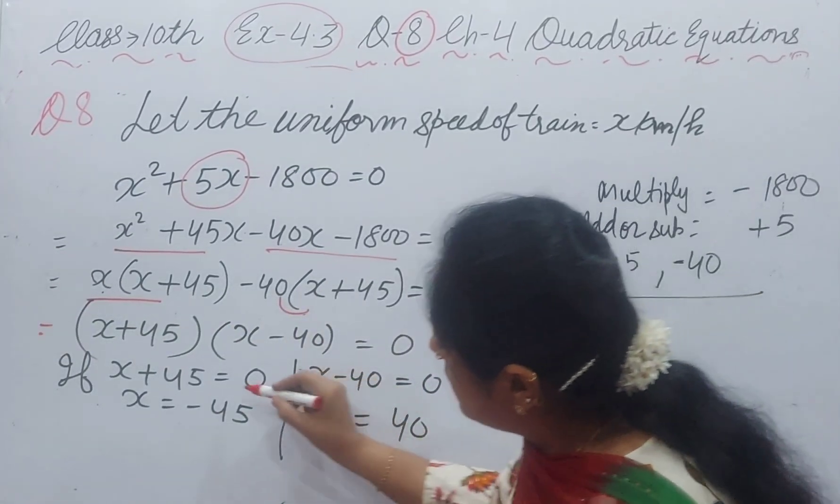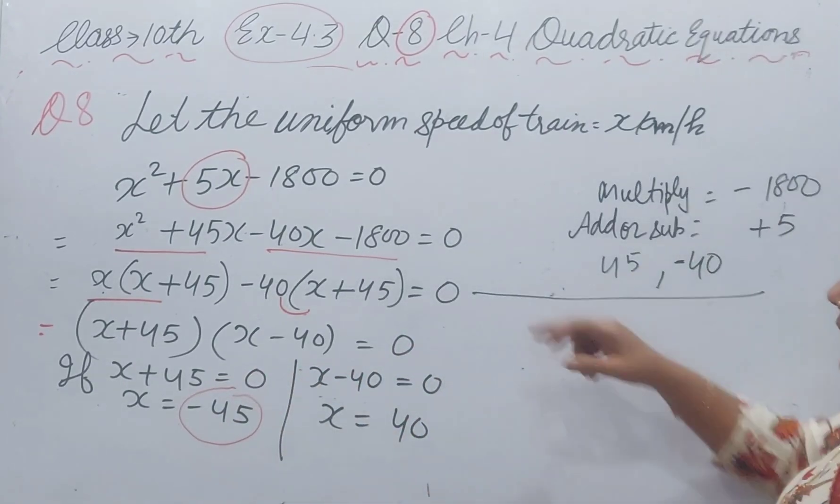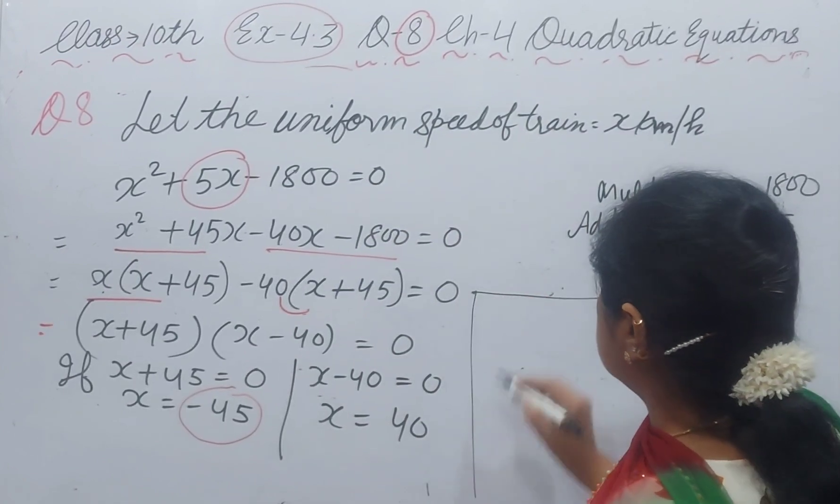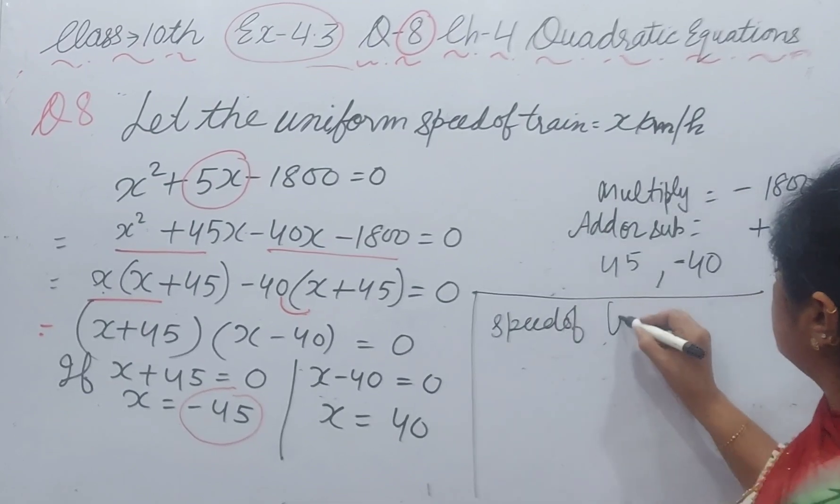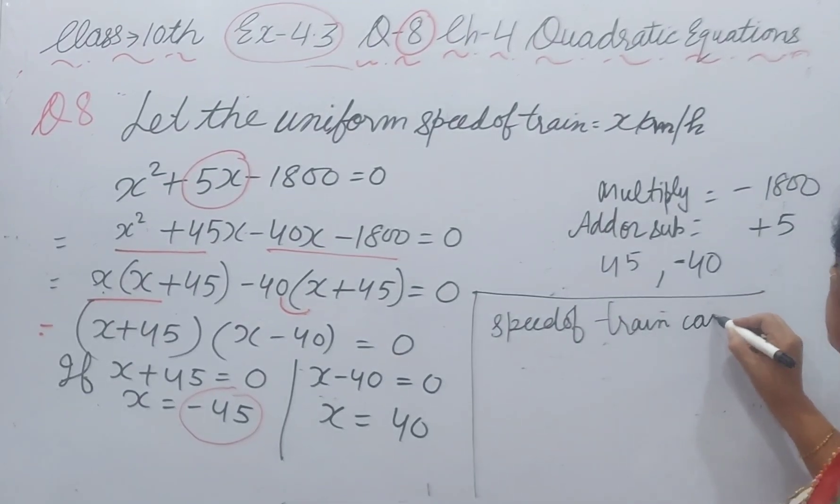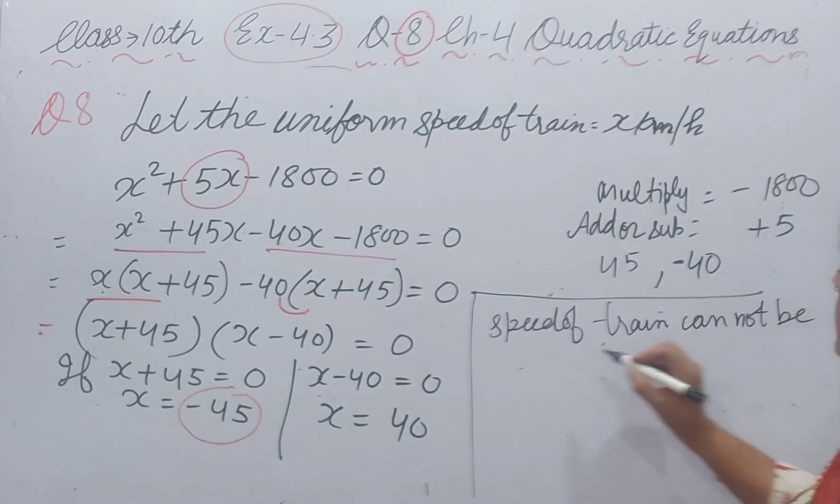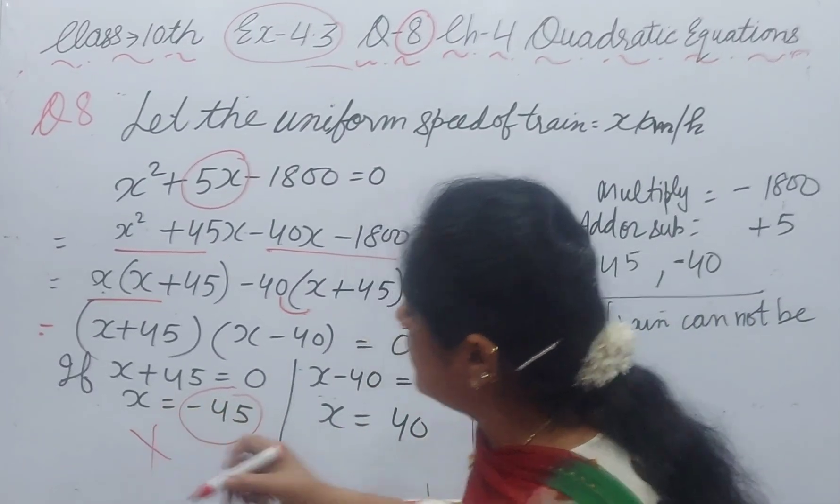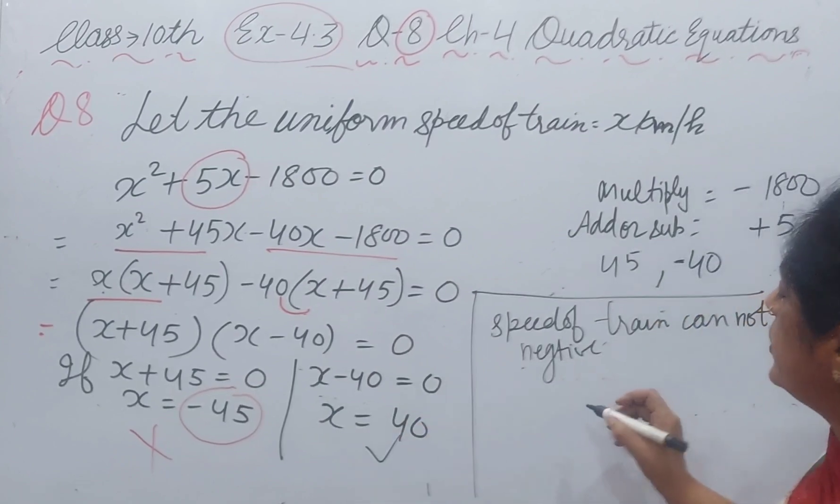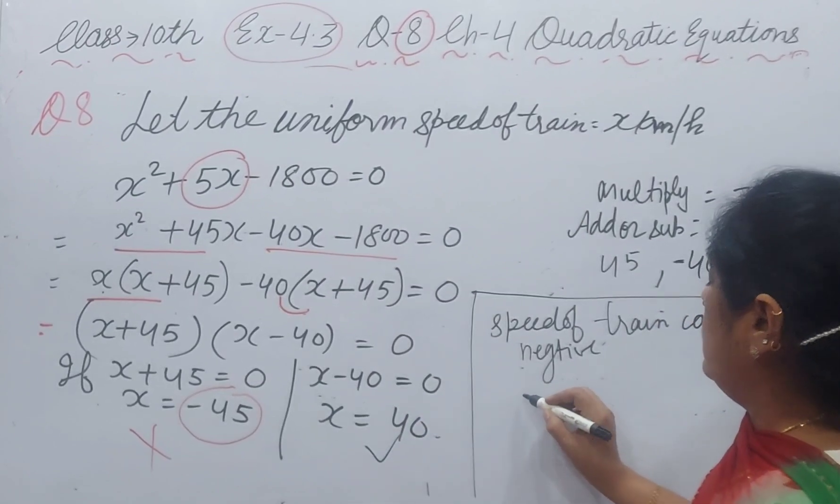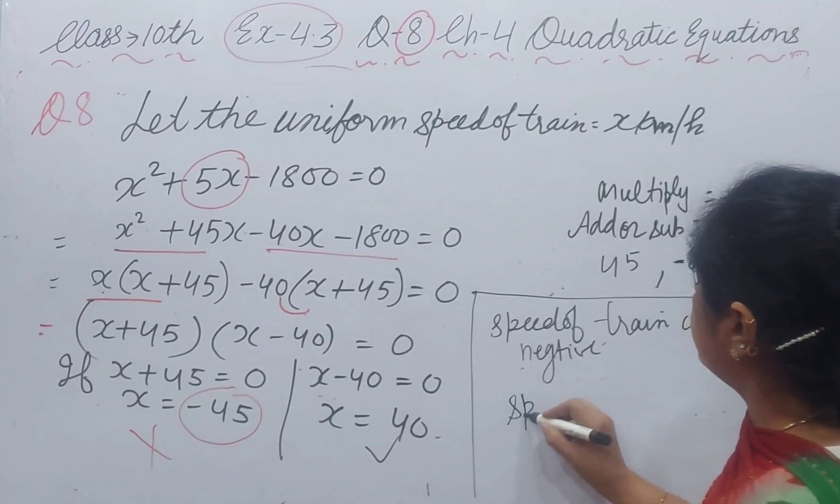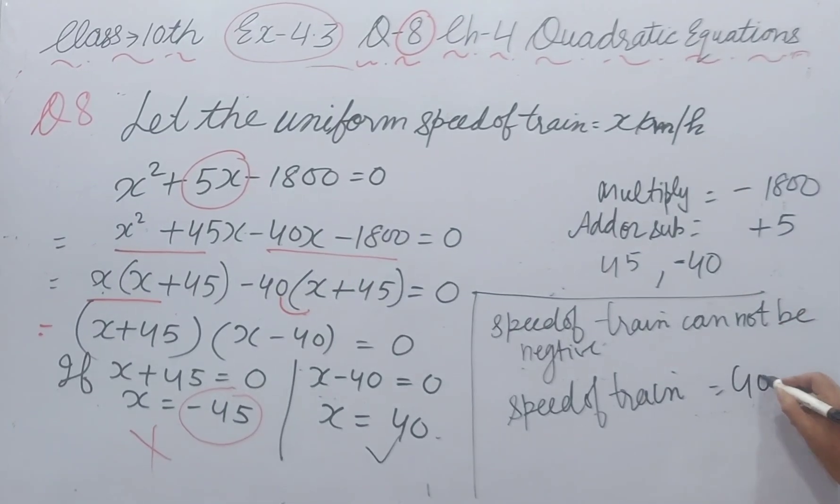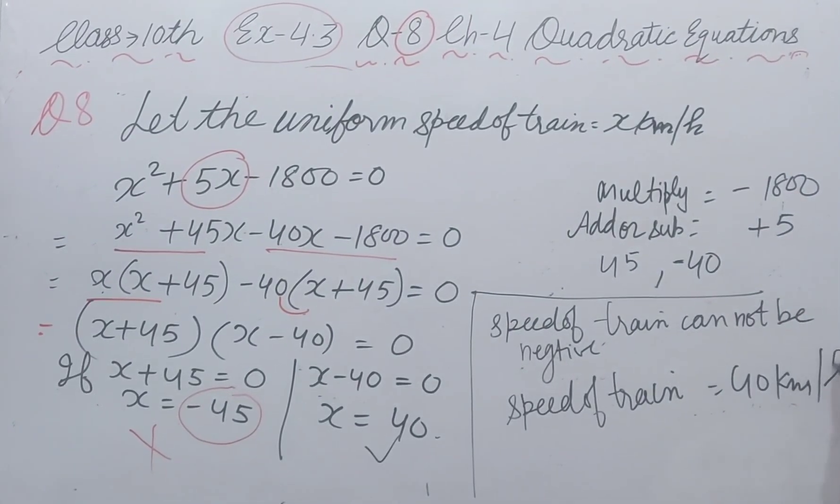Now, this minus 45 is there. x we have assumed as uniform speed of train. You know that speed of train cannot be negative. So, we will ignore this value. And x equal to 40, we will take this value. And your answer will be speed of train, 40 km per hour.